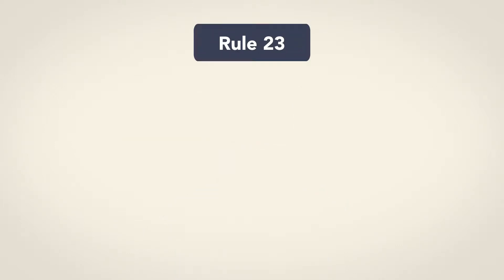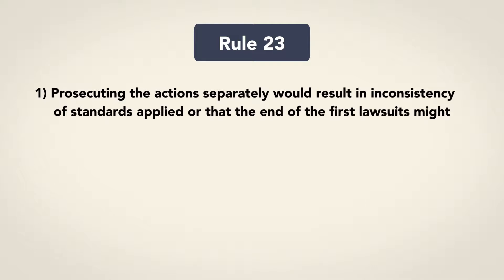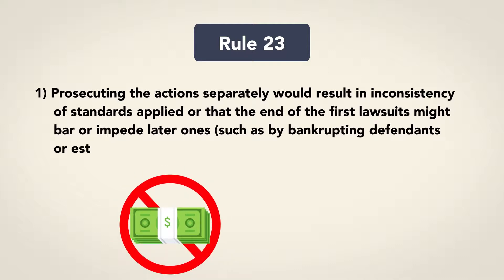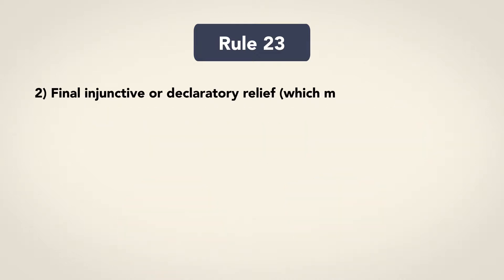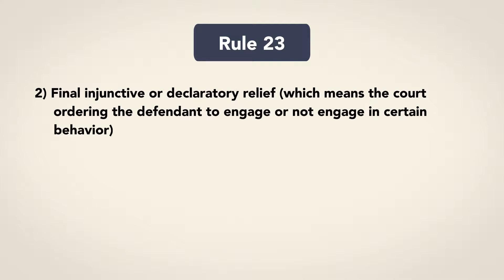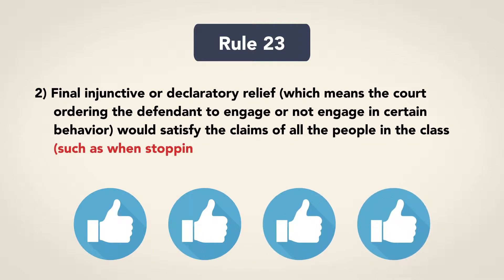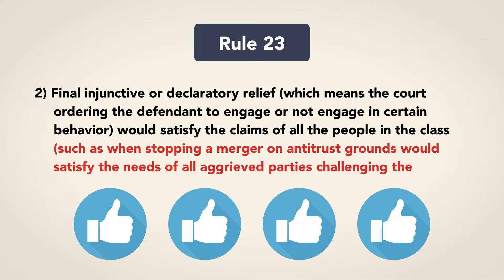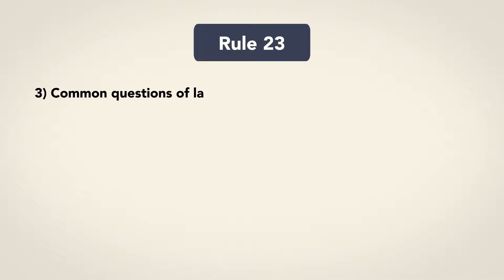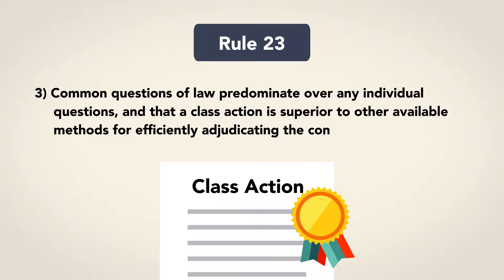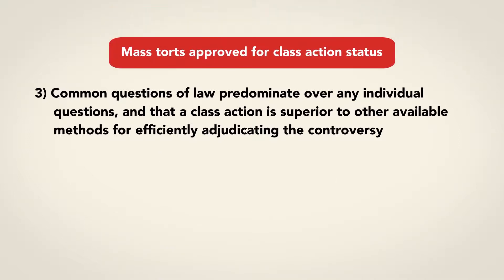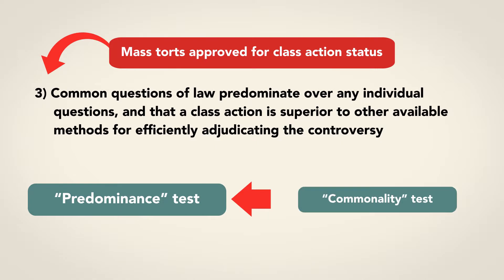Rule 23 lists three such possible reasons. First, prosecuting the actions separately would result in inconsistency of standards applied, or the end of the first lawsuits might bar or impede later ones — such as by bankrupting the defendants or establishing judicial precedent that would bar the later actions. Second, final injunctive or declaratory relief — the court ordering the defendant to engage or not engage in certain behavior — would satisfy the claims of all people in the class, such as when stopping a merger on antitrust grounds would satisfy all aggrieved parties. Third, common questions of law predominate over any individual questions, and a class action is superior to other available methods for efficiently adjudicating the controversy. Mass torts that are approved for class action status typically fit into Category 3. This predominance test is an extension of the commonality test.